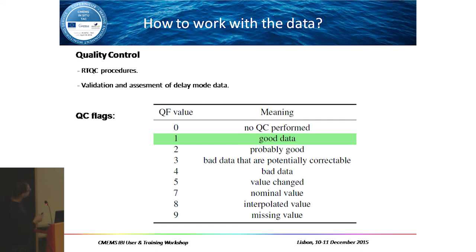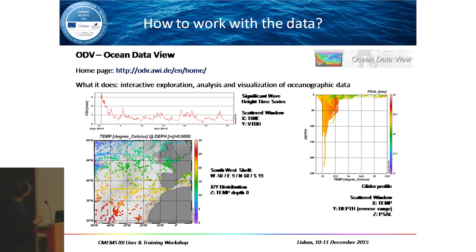We have real-time quality control processes shared across all In-Situ TAC areas, and evaluation and assessment for delayed mode data. The QC flags agreed upon between all groups are: 0 — no quality control applied; 1 — good data; 2 — probably good; 3 — bad data potentially correctable; 4 — bad data; 5 — value changed; 7 — nominal value; 8 — interpolated value; 9 — missing or null value. Note that 6 is not used. Here is a graphical tool — Ocean Data View (ODV) — very useful for plotting time series or whatever you need.